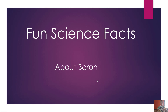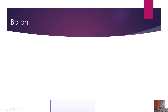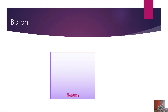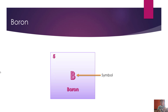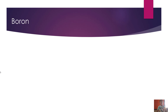Hello guys, today we are going to discuss some of the fun science facts about boron. Boron's symbol is B, with 5 as its atomic number and 10.811 as its atomic weight.